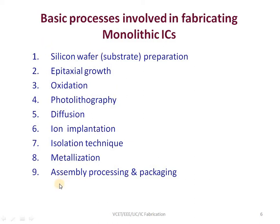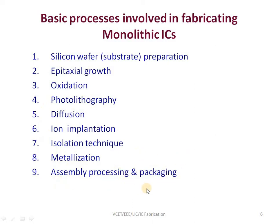These 9 steps are the basic steps involved in fabricating an integrated circuit. It starts with silicon wafer preparation, followed by epitaxial growth. Then an oxide layer is grown, and the circuit is implanted via the photolithographic process. Diffusion and ion implantation are done for device characterization. Isolation is required to separate circuits, followed by metallization to join all circuits, and finally packaging.